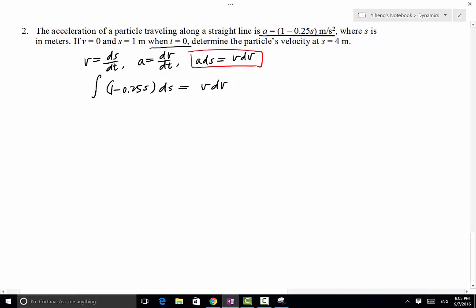On the left-hand side, we integrate from the initial condition, that is when s equals 1, not 0, and integrate to current s. On the right-hand side, when t equals 0, the initial condition v is indeed 0, and integrate to current v. So the right-hand side simply becomes one-half v squared, because the initial velocity is 0.